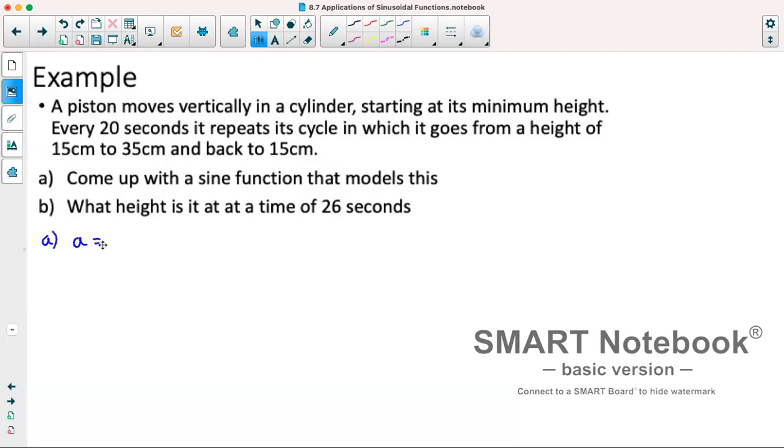So for part a, the first thing we will solve for is our a value or amplitude. So we know our amplitude is the distance between our minimum and maximum points divided by 2. So our maximum was 35, we'll subtract our minimum from that, so 15, divided by 2. That gives us an amplitude of 10. Now to get our d value, it's the average of our maximum and minimum values divided by 2. So 35 plus 15 divided by 2 gives us a midline of 25. Now we know our b value is 2π divided by our period. Now in this case it tells us it repeats every 20 seconds so that's our period. So we have 2π divided by 20. We can reduce this to lower terms, so that's π over 10.